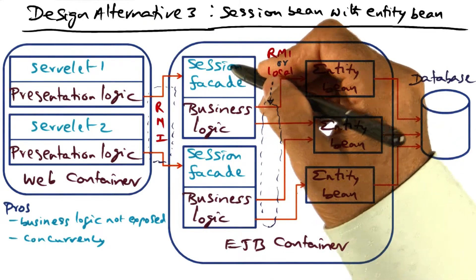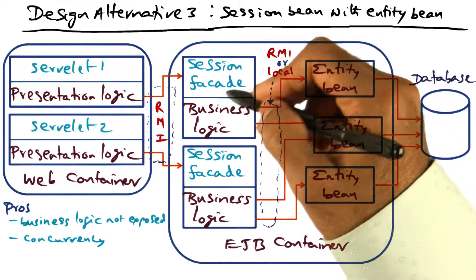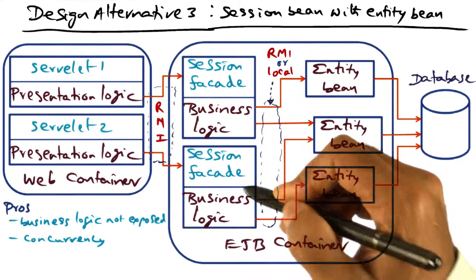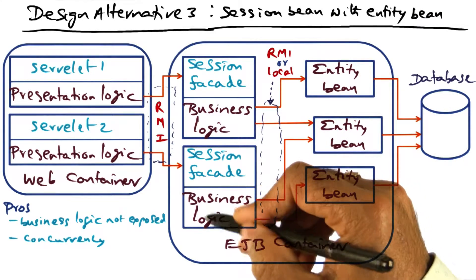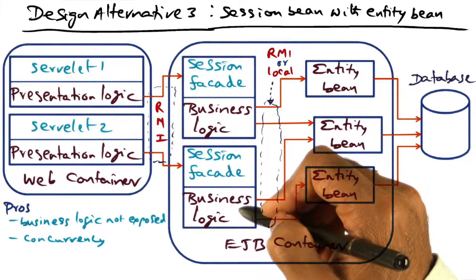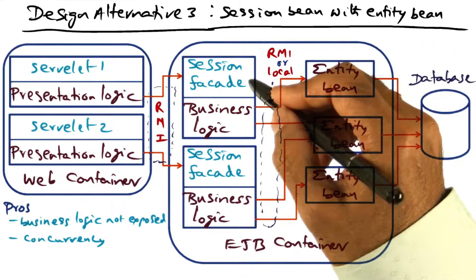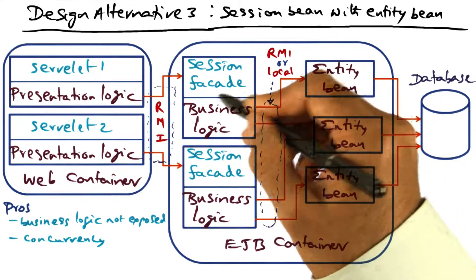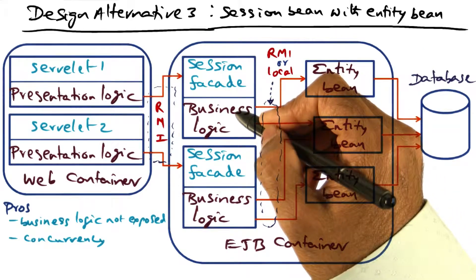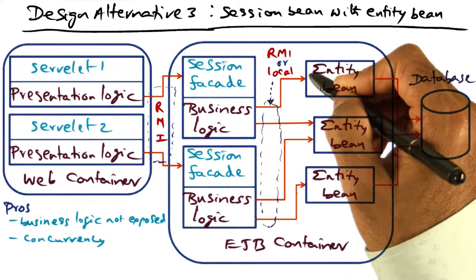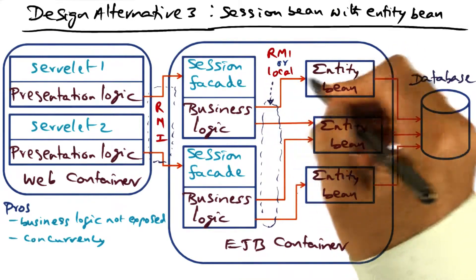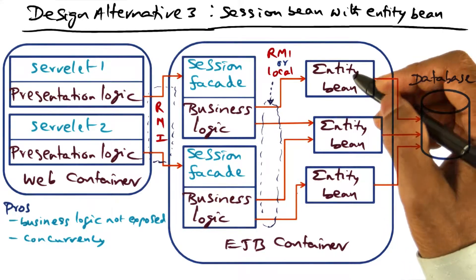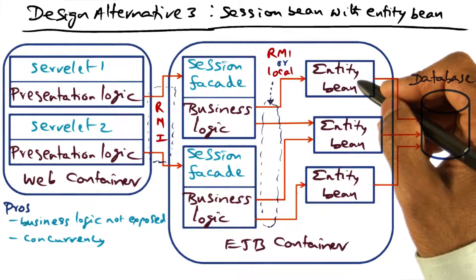The session facade is handling all the data access needs of its associated business logic. Similarly, this session facade is handling all the data access needs of its business logic. The session facade farms out the data access requests corresponding to the business logic associated with this session, creating an opportunity to exploit parallelism through parallel requests to multiple entity beans handling different portions of the database.